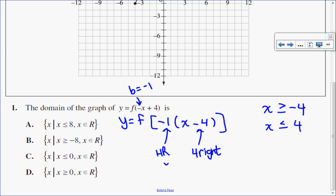That's my horizontal reflection. Now I'm going to pick the entire graph up and move it 4 units to the right. So it stays as less than or equal to, but I take 4 plus 4, and it is 8. So x less than or equal to 8, which would make A my answer.